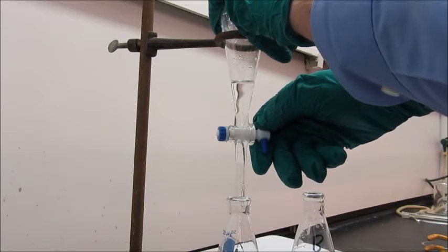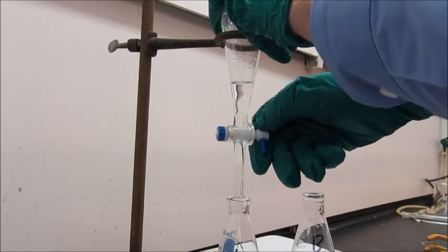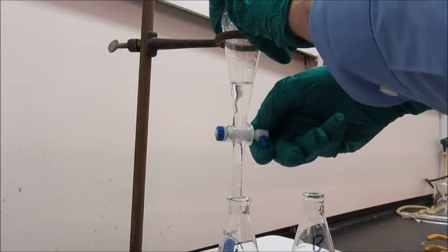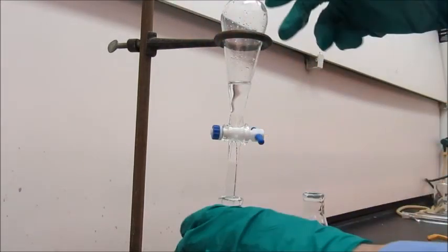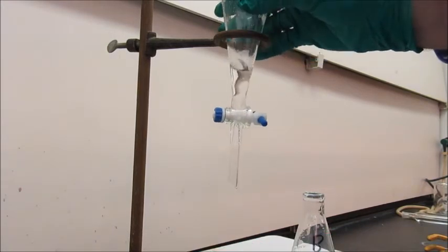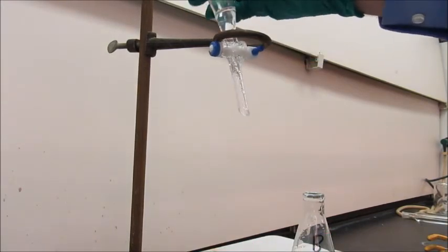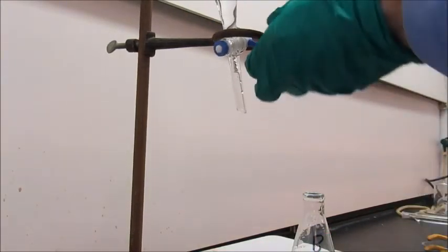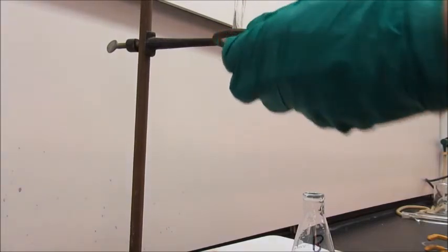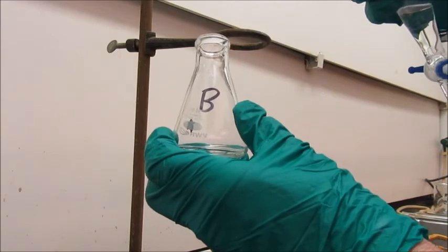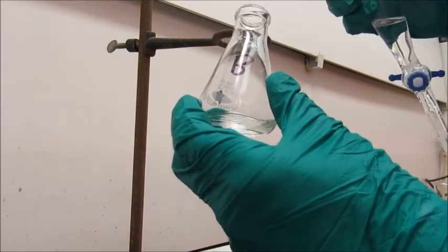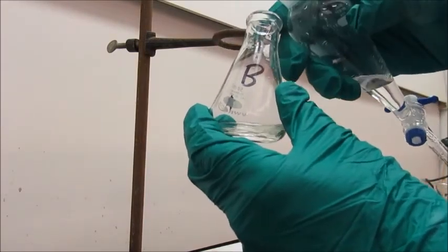So I'm slowing down to a drip now. And now we're there. So again, we'll take out the top layer. And I'm going to pour it out the top and into flask B, which has the top layer from the earlier separation.